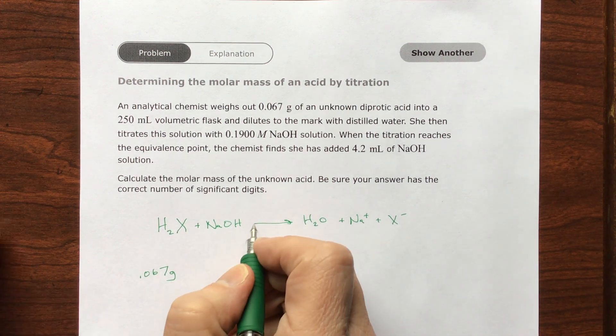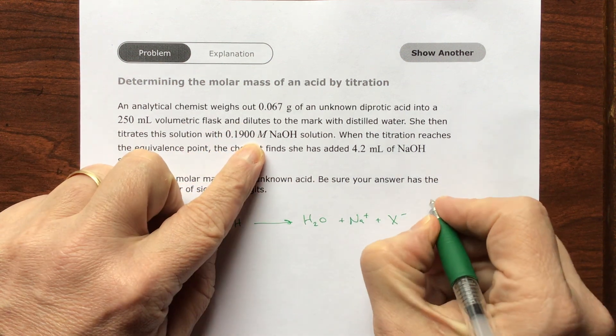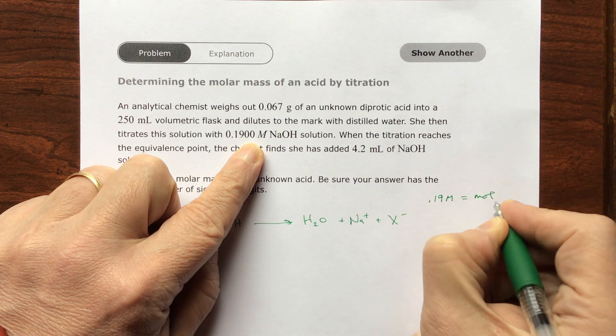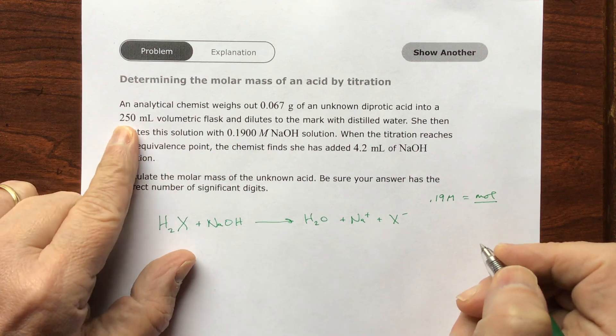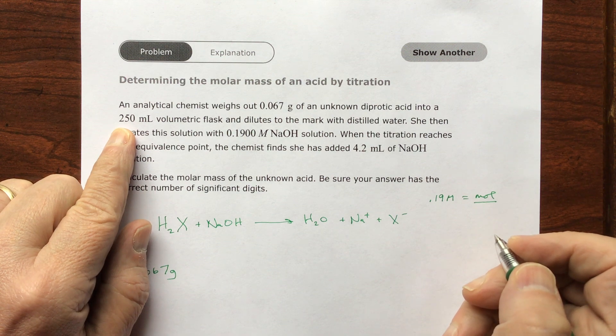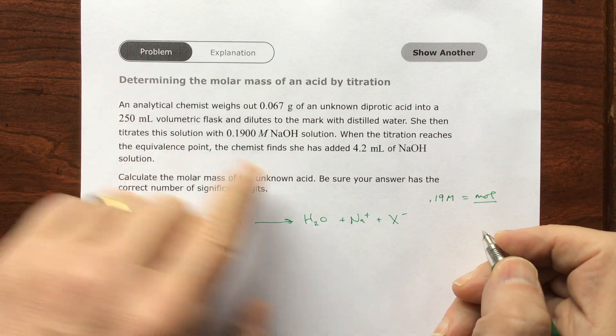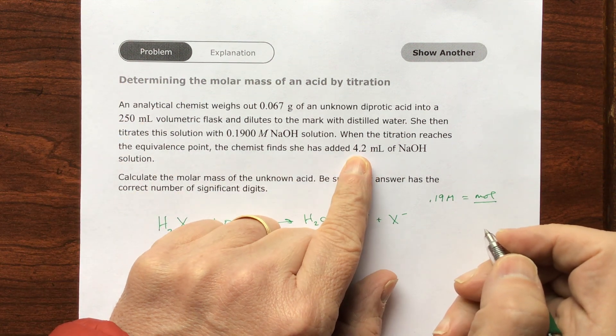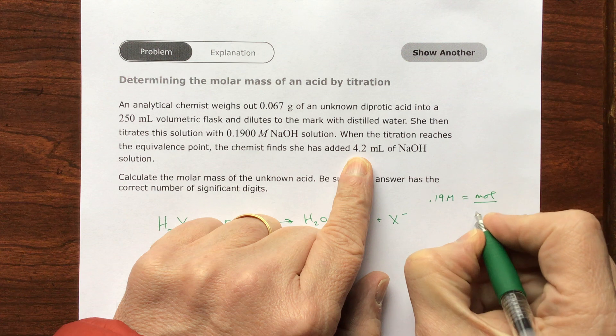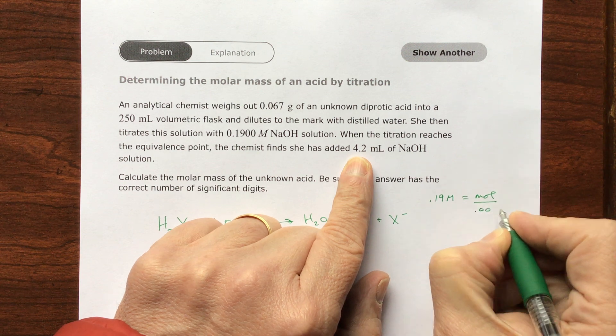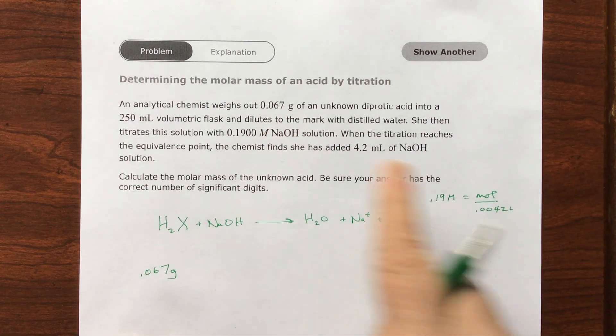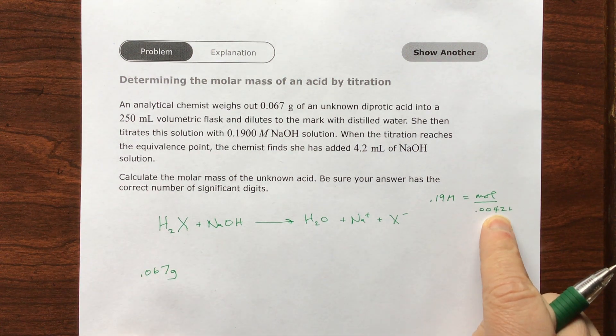So what do we got? We have a molar solution of hydroxide, so 0.19 molar sodium hydroxide, and that equals moles over liters. We have 4.2 milliliters of sodium hydroxide. I need this in moles over liters, which is molarity, so that means I need to divide that by a thousand, so this is 0.0042 liters.